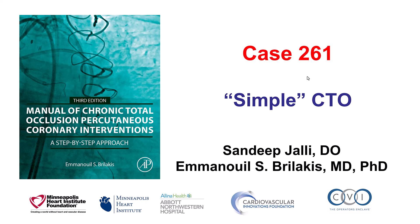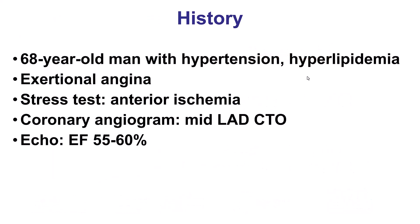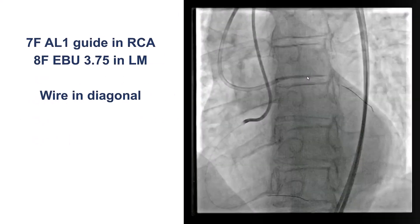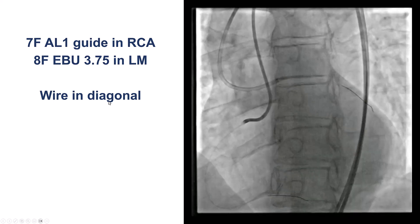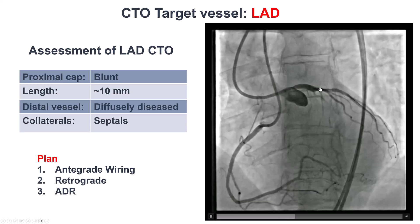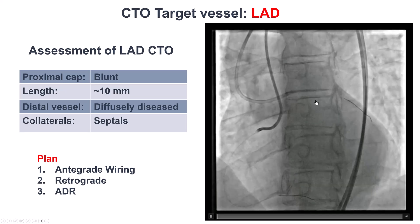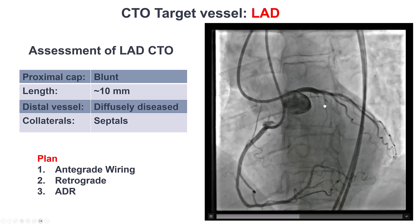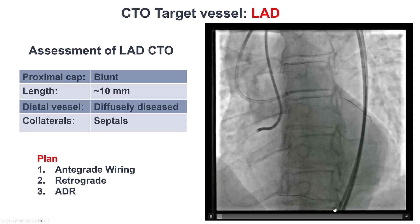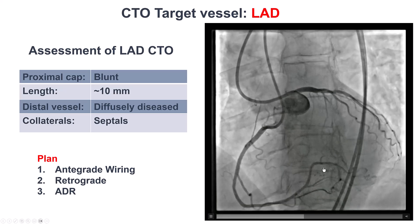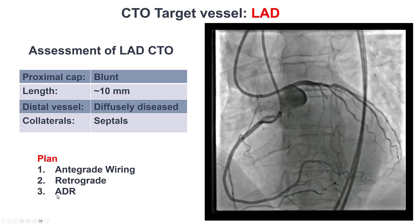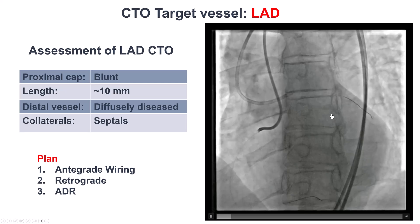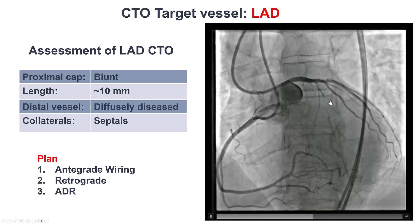This is a case of a so-called simple CTO. The patient presented with exertional angina, was found to have anterior ischemia with a mid-LAD CTO and a normal ejection fraction. The left was engaged with an EBU, the right with a 7 French AL1 guide. This is a dual injection demonstrating a CTO of the LAD with a relatively blunt proximal cap. Length is fairly short, about 10 mm. The distal vessel is diffusely diseased and filling through septal collaterals from the PDA. Our plan was to go with antegrade wiring. If that didn't work, retrograde through septals. If that didn't work, ADR — which is the least favorable approach for LAD CTOs because of the risk of losing diagonals and other important branches.